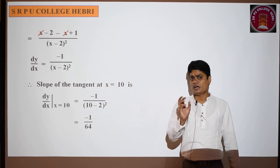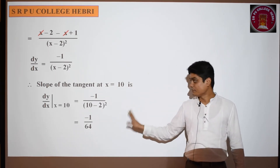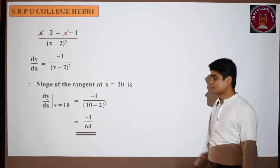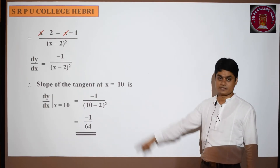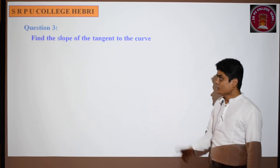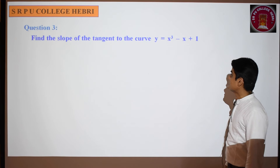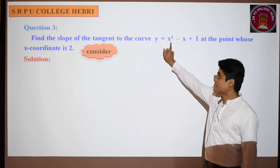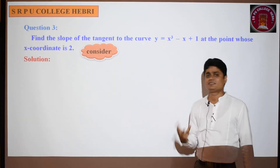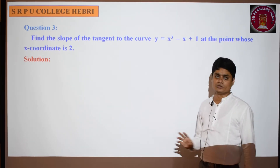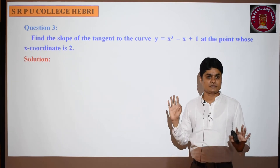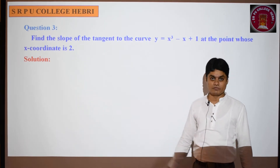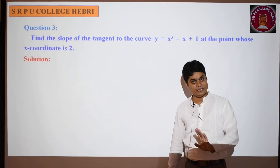I hope you understood. The difficult part is applying the quotient rule. The remaining part is very simple. Application of derivatives is a very simple topic. The final answer is -1/64. Next, question 3 is a homework problem: find the slope of the tangent to the curve y = x³ - x + 1 at the point whose x-coordinate is 2. Differentiate and replace x by 2 to get the answer. I hope you can solve this.